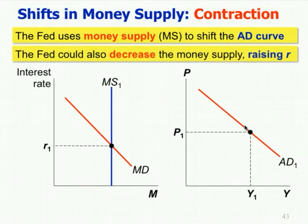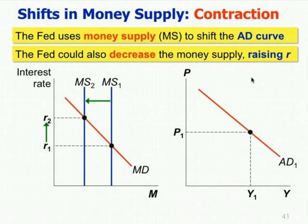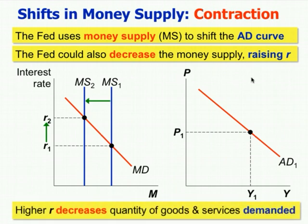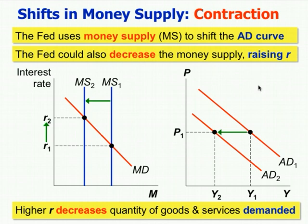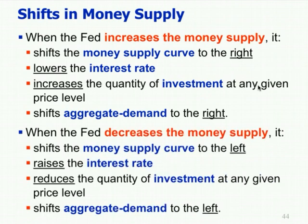For contractionary policy, the Fed decreases the money supply — shifts it to the left, say from MS1 to MS2 — raising the interest rate. A higher interest rate increases the cost of investment, so we have lower investment, which shifts aggregate demand to the left and reduces the quantity of goods and services demanded. When the Fed decreases the money supply, it shifts the money supply curve to the left, raises the interest rate, reduces investment at any given price level, and shifts aggregate demand to the left.